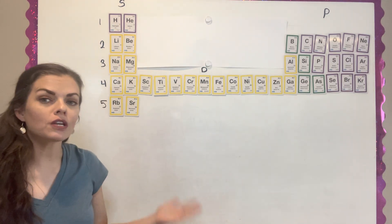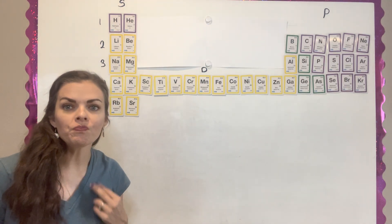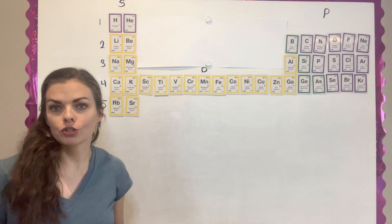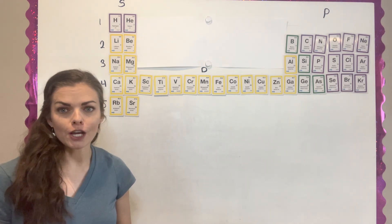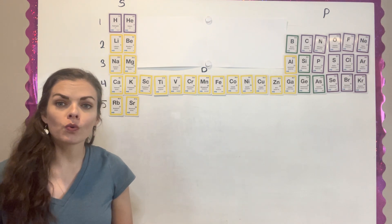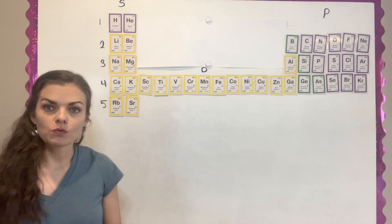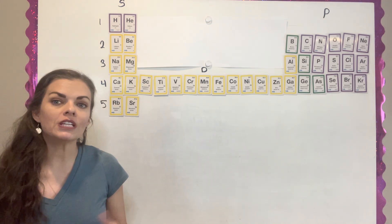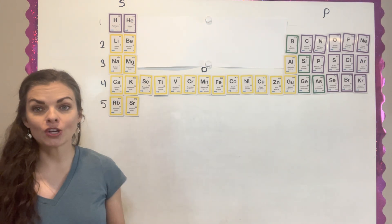For our comprehension check for chapter four, part two, we're going to start learning something called a Lewis structure. A Lewis structure is a Lewis dot diagram that helps show you where the valence electrons are on elements. We've talked in the past about how these are the outermost electrons — these are the ones that are going to be interacting.